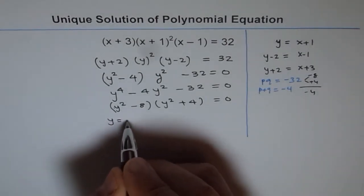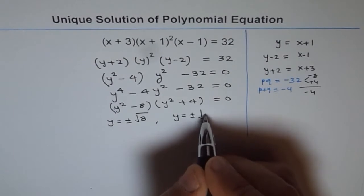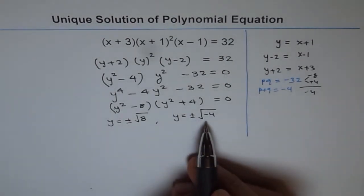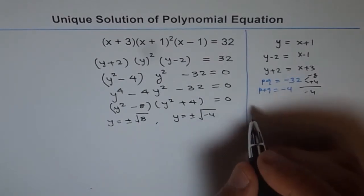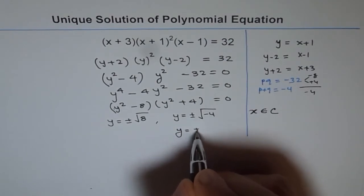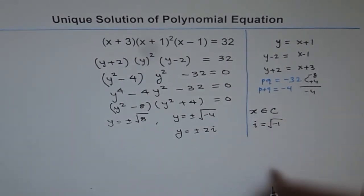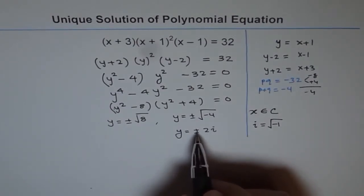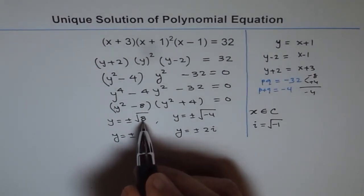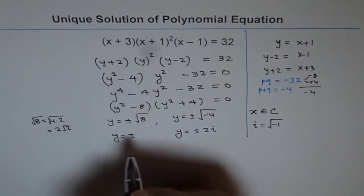The solution is: the first factor is 0 when y equals plus or minus square root of 8, and the second factor is 0 when y equals plus or minus square root of minus 4. That second one is not a real solution, but in the domain of complex numbers y equals plus or minus 2i, since i equals square root of minus 1. Complex roots always appear in conjugate pairs. And square root of 8 can be written as 2 root 2.